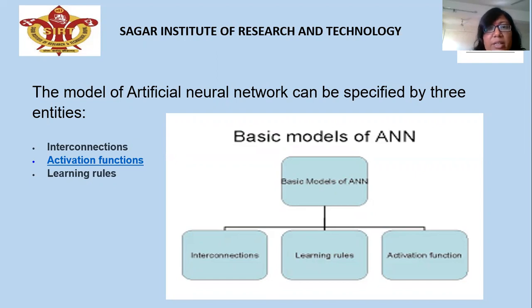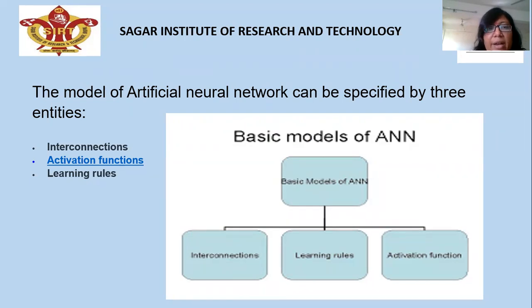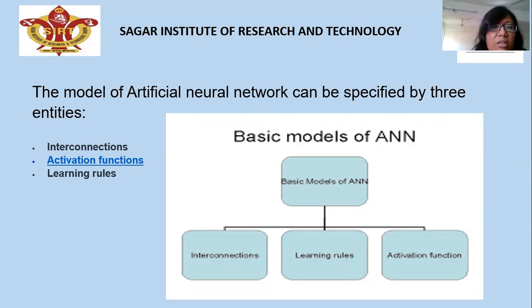The design or architecture of the neural network can be classified based on two factors: the interconnection — how the nodes are interconnected — what activation functions are used in the model, and what the learning rules are.